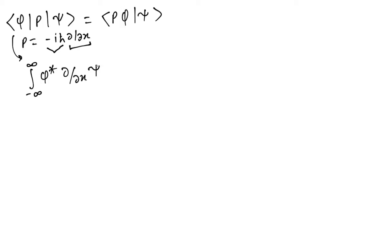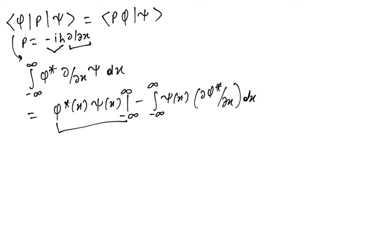For now, let's just consider del over del x and we'll incorporate this later. Let's find a relation to prove this. We can do integration by parts and we get minus infinity to infinity, psi times x del phi star del x dx, plus the boundary term evaluated from minus infinity to infinity.